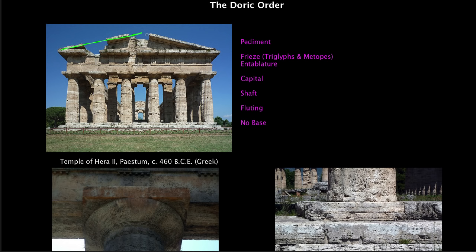Let's start at the top with the pediment. It isn't officially part of the order, but since Greek temples had one at either end, we'll name it — that triangular space at the very top of the temple. These are gabled roofs; sometimes they would be filled with sculpture. The next area below the pediment is officially part of the order and is called the entablature. The top part of the entablature is called the frieze.